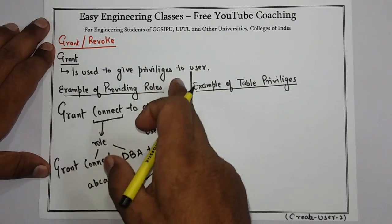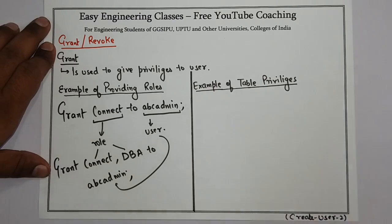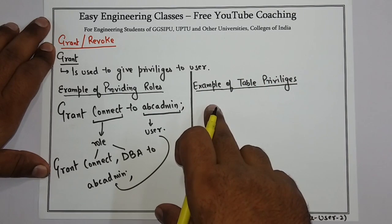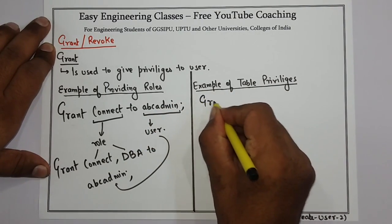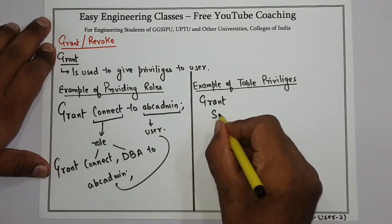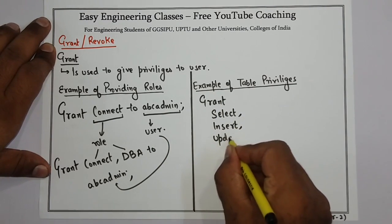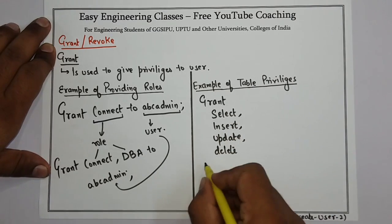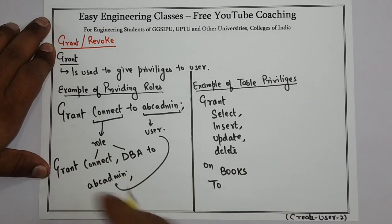The most commonly used GRANT statement is when we provide table privileges. Table privileges give the ability to perform SELECT, UPDATE, INSERT, and DELETE operations on a table. For example, to give access to all operations on the Books table to ABC_Admin, you write: GRANT SELECT, INSERT, UPDATE, DELETE ON Books TO ABC_Admin. This is how you can provide access to a user for different types of operations using the GRANT statement.